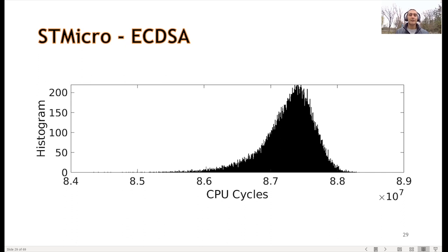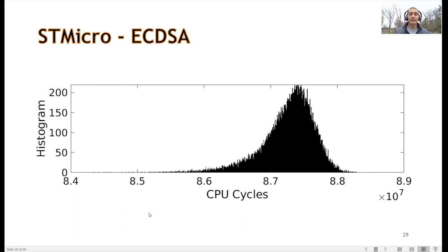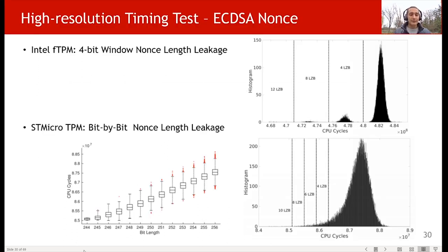STMicroelectronics has a similar vulnerability — not every four bits, but for every additional leading zero bit there is a timing difference. At first sight, the Gaussian distribution for STMicroelectronics looks like a normal distribution, but there are more samples on the left side with a steep rise. If we filter for signatures generated before a certain timing threshold, all those signatures are guaranteed to have a minimum number of leading zero bits. There is a linear relationship between the number of leading zero bits in the nonce and the timing for STMicroelectronics ECDSA operations.